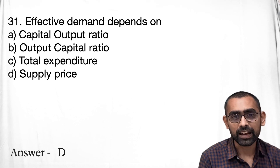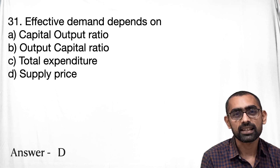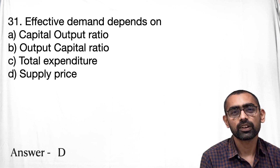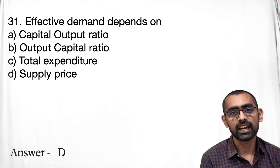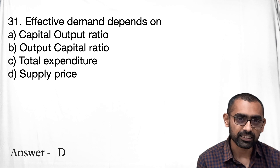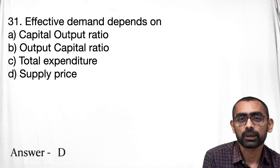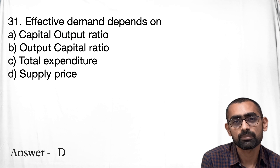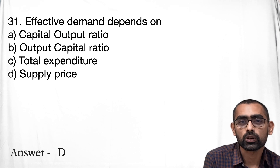Question 31 is about effective demand. In the previous video we have seen basic economic concepts, and you can see it's a very direct question. So if you have read the basics of economy — which you should — because there are always 10 to 15 questions, you should be able to easily answer that it basically depends on the supply price. This is a reminder that the basics of economics is very, very important and you should go through all these concepts.